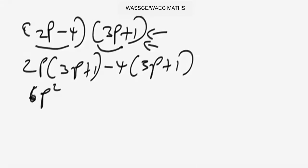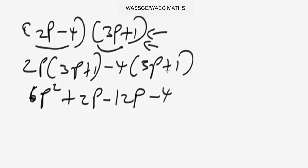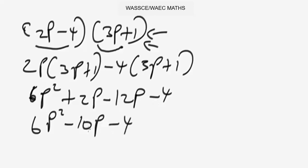When we simplify: 2p times 3p gives us 6p squared; 2p times 1 gives us plus 2p; minus 4 times 3p gives us minus 12p; minus 4 times 1 gives us minus 4. Collecting like terms: we have 6p squared, and 2p minus 12p gives us minus 10p, minus 4. That's the answer — a quadratic expression.